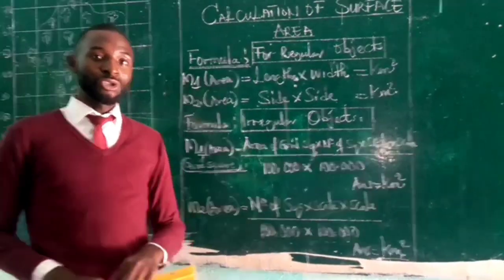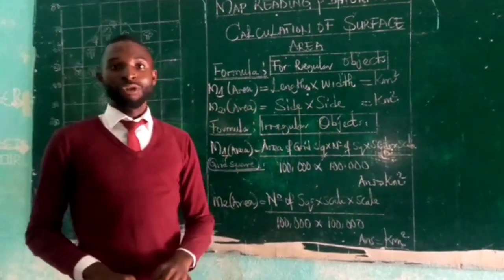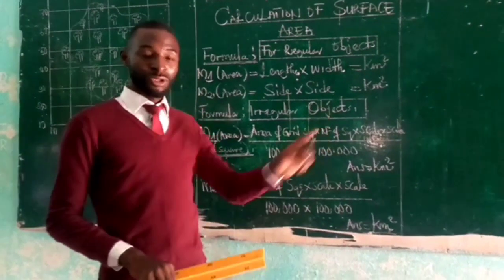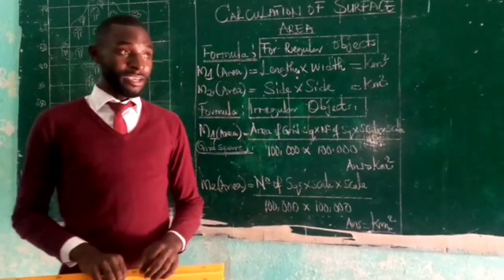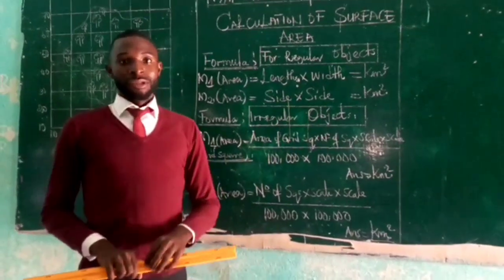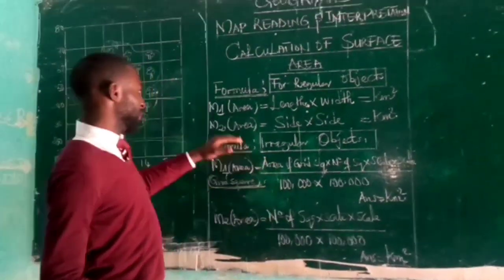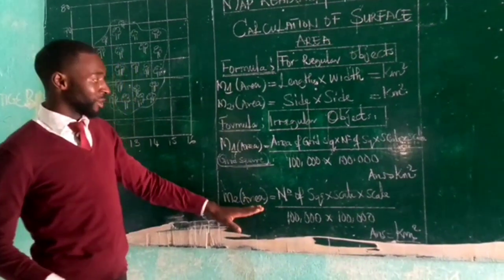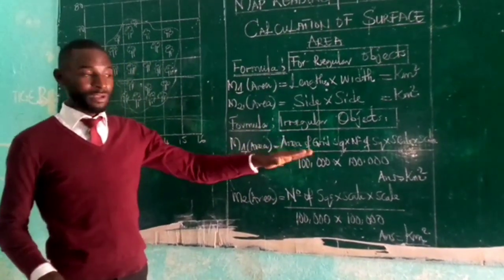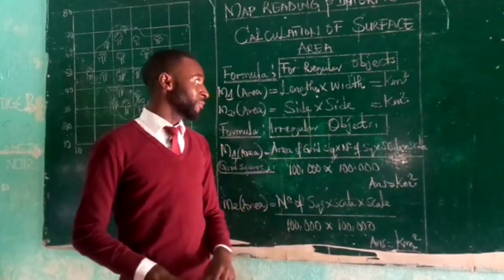For GC students, you should be very careful here — the GC will never tell you what formula you are going to use. You are the one to identify the type of formula or method you are going to use to calculate the surface area on your map. If you use this method whereas you are supposed to use the other method, you are bound to fail because the answers will not be the same. Of course we will have the same units, but they will not be the same.